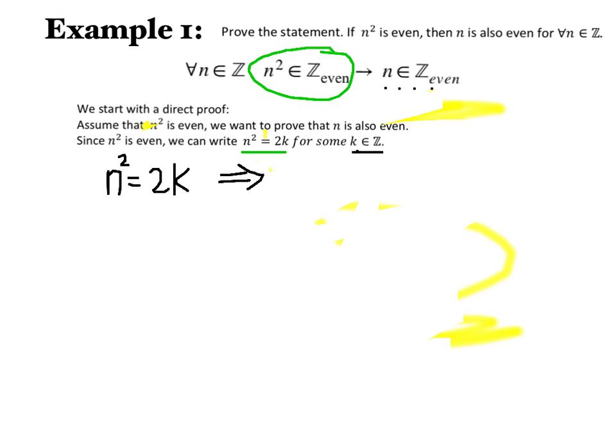By taking the square root of both sides, we can try to isolate n to try to prove our conclusion here. By doing that, we can say that if n squared is even, that implies that n is equal to the square root of 2k, which doesn't really help us very much. We're trying to make this part here look in the form of 2 times an integer.